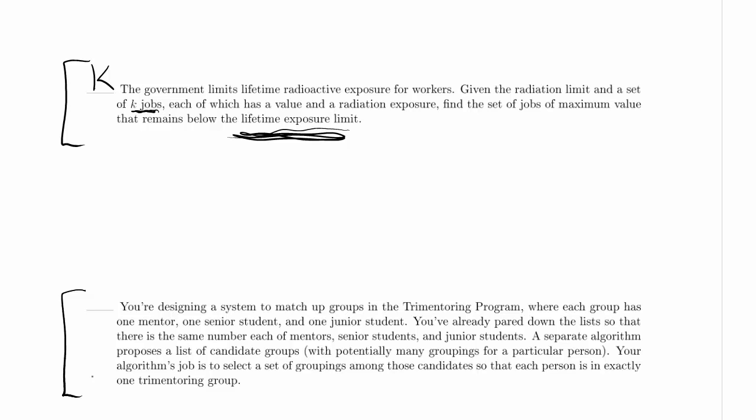You've already paired down the list so that there is the same number each of mentors, senior students, and junior students, and a separate algorithm proposes a list of candidate groups with potentially many groupings for a particular person. Your algorithm's job is to select a set of groupings among those candidates so that each person is in exactly one Tri-Mentoring group.